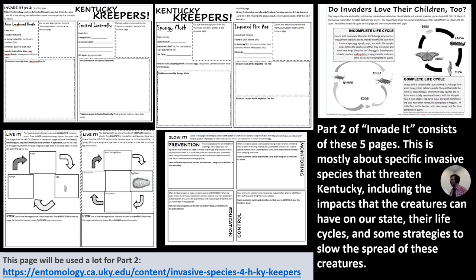That's it for Part One. We imagined Part One is done one day and Part Two another day. Part Two is a little longer — it might even take two days — and consists of five pages. One of those pages is just information. Part Two is really more about specific Kentucky invasive species, either already in Kentucky or threatening it. Youth will use a website we've made that goes through four of our main invasive species, with paragraphs they'll need to read and answer questions about.